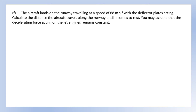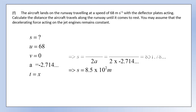The aircraft lands on the runway traveling at 68 meters per second with the deflector plates acting. Calculate the distance the aircraft travels along the runway until it comes to rest, assuming the decelerating force remains constant. Since the force is constant, we can use suvat equations. We know the initial speed, the final speed is zero, and we know the acceleration, so we can solve for distance - which comes out at approximately 850 meters.